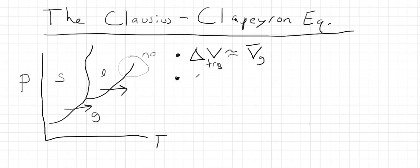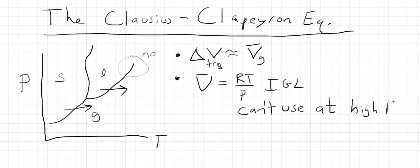We're also going to say that the molar volume of gas is approximately equal to RT over P. And of course that's the ideal gas law. That means we can't use this if we are at a high pressure, very high P. So typically we use this for maybe a few atmospheres or even lower.